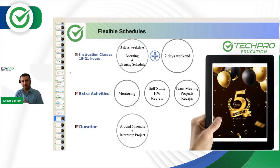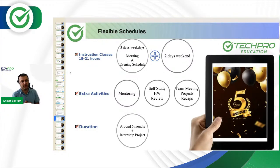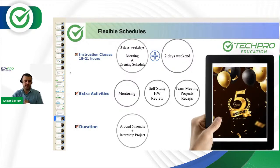Schedule-wise, we offer classes on average five days a week — three weekdays such as Monday, Tuesday, Wednesday, and two weekend days, Saturday and Sunday. That is around 18 to 21 hours of live instruction per week, with extra activities such as mentoring, self-study groups, and recap sessions on top of that. In total, without projects, the program is about six to eight months. The Java developer program has slightly larger content — minimum six months of instruction — and with front-end and back-end projects it can take about seven to eight months total.